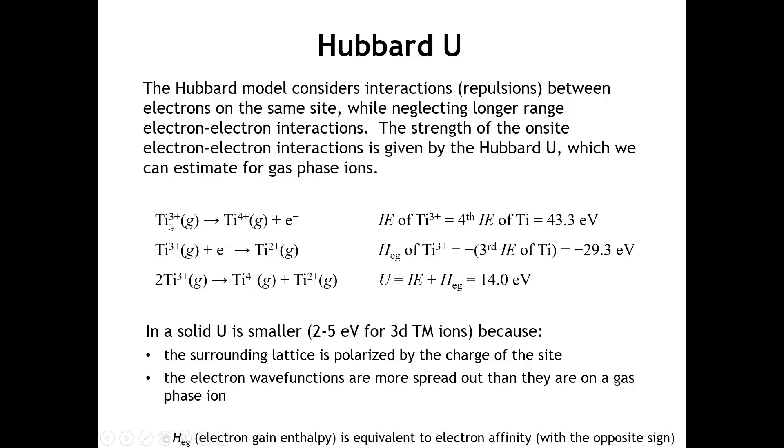For example, titanium 3-plus going to titanium 4-plus plus an electron is just the ionization energy of a titanium 3-plus ion. You can look that up. It's 43.3 electron volts.